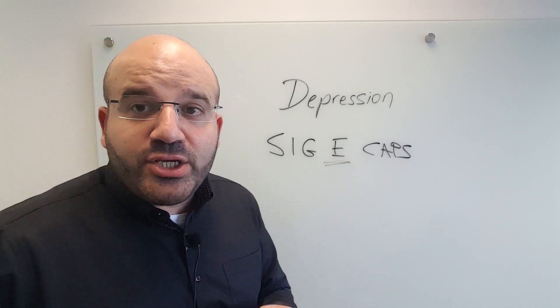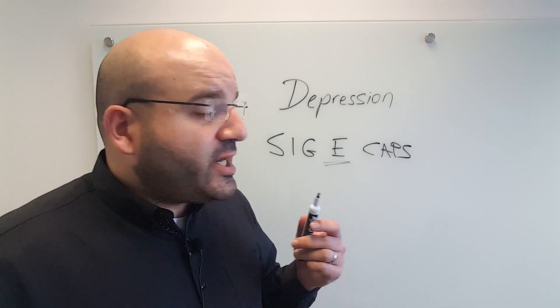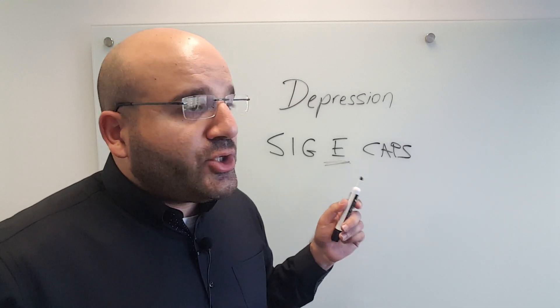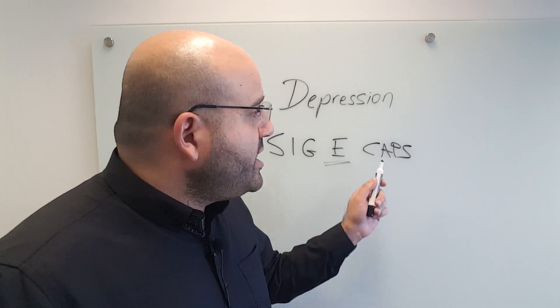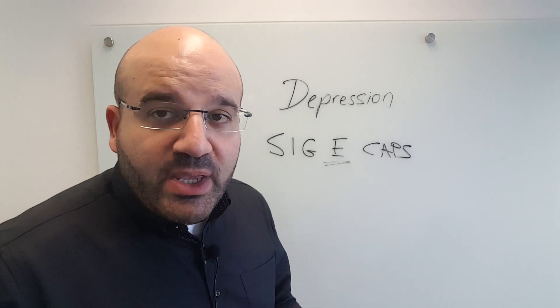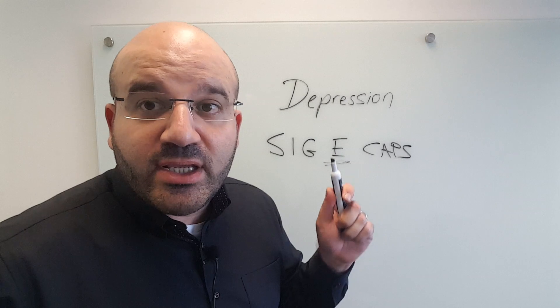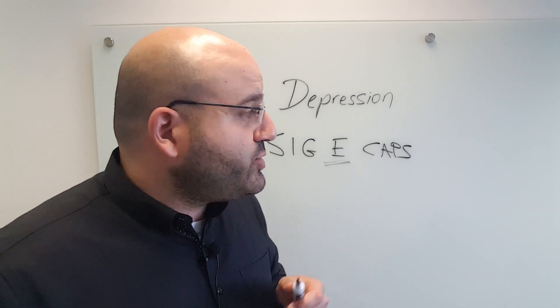C stands for concentration, and this refers to the cognitive disturbances we view in depression. What we see here is poor concentration, reduced short-term memory, trouble making decisions. It's very typical in depression as a clinical syndrome or disorder.